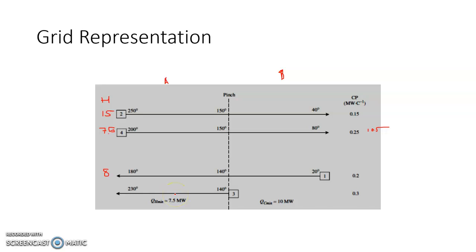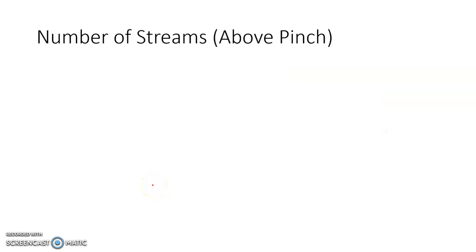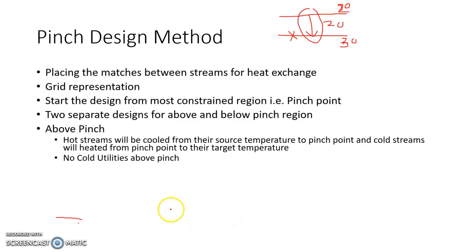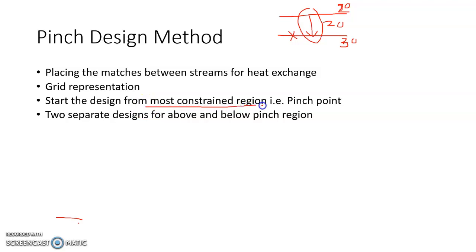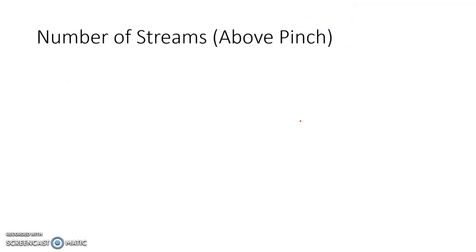This is how we represent streams on the grid diagram, and we'll explore this further when designing the network above and below the pinch. An important aspect of designing is that we concentrate on the above pinch region and start the design from the most constrained region, matching pairs of streams which are at the pinch point. As you move away from the pinch point, the temperature difference between streams generally exceeds ΔT minimum, giving more design freedom.